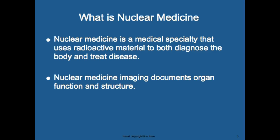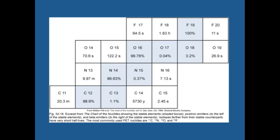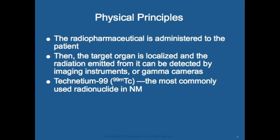Radiopharmaceutical agents have two components: a radionuclide and a pharmaceutical. The pharmaceutical is selected based on its role in the target organ's physiological function, so it will be targeted just for that organ. The radionuclide is tagged to the pharmaceutical. The radiopharmaceutical is administered to the patient, the target organ is localized, and the radiation emitted can be detected by imaging instruments or gamma cameras. Technetium-99 is the most commonly used radionuclide in nuclear medicine.